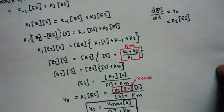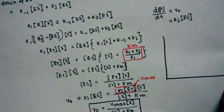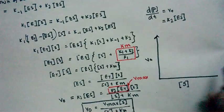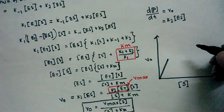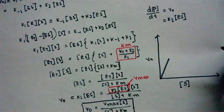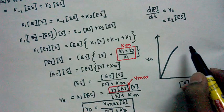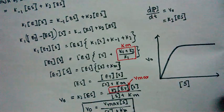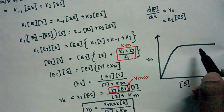Now let's plot a graph for this equation. On the x-axis we have substrate concentration and on the y-axis the velocity of enzyme reaction. When substrate concentration is low, velocity and substrate concentration show a linear relationship — velocity gradually increases with substrate. But after a certain high substrate concentration, increasing substrate no longer changes velocity much, and the curve reaches a plateau.